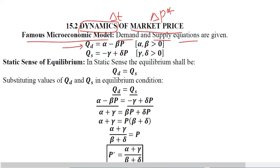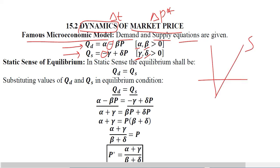This is the demand equation and this is the supply equation. Alpha, Beta, Delta and Gamma — all of these are parameters and they are positive here. However, these signs make their own interpretations, as we will go ahead and see how they can be simplified. This negative sign shows a negative relationship of price and quantity demanded, and this negative sign shows a negative intercept of the supply curve. This is Gamma, and since it has entered into the negative coordinate, it is now a negative intercept.